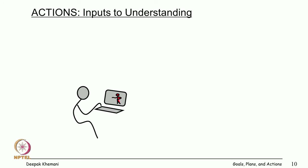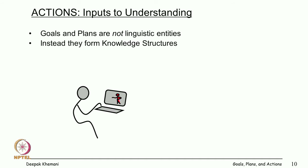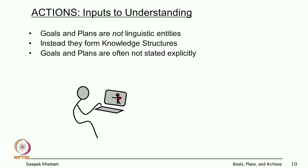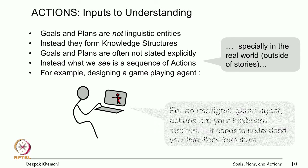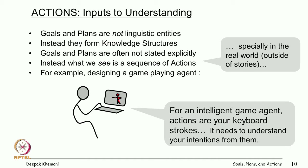Typically one observes actions — goals and plans are not stated explicitly. What you see is action. Goals and plans are typically part of knowledge that people carry in their heads; they are not often stated explicitly. Instead what we see is a sequence of actions. For example, if you are designing a game-playing program, the agent has only access to your keystrokes and does not know your goal or plan — only the actions you are taking.